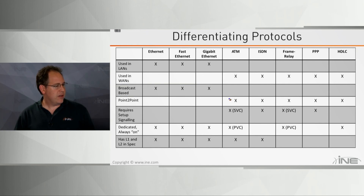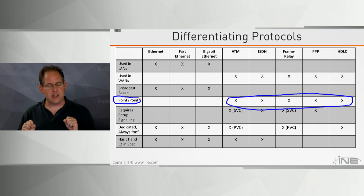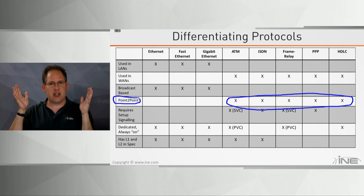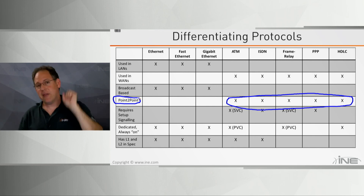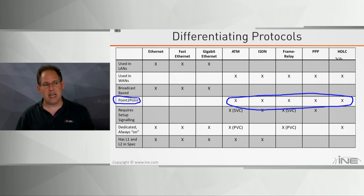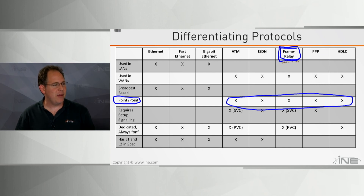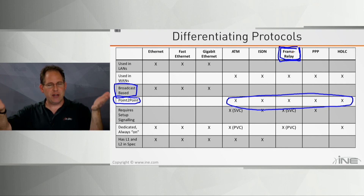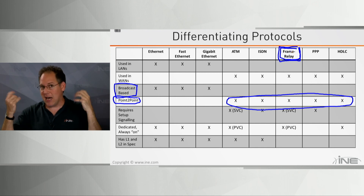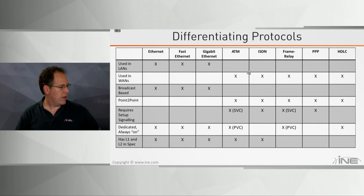ATM, ISDN, Frame Relay, PPP, and HDLC are point-to-point based protocols, meaning when data is put on the wire it can only go to one place — there are not multiple destinations on the wire. Frame Relay is slightly debatable, but it is definitely not broadcast-based; there's no way to put a single Frame Relay frame on a wire and have multiple devices see it.